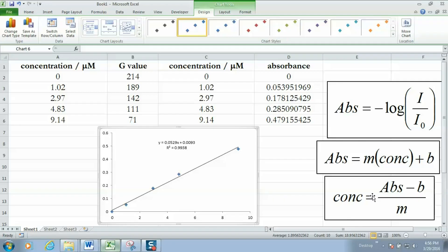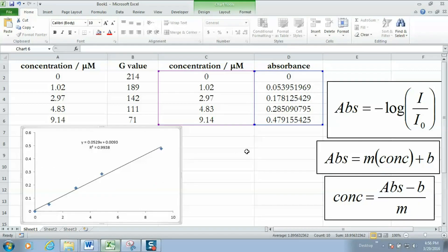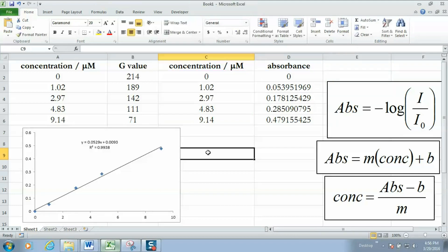You might recall that our absorbance, excuse me, our green intensity of our unknown was 116. So from that I need to calculate the absorbance. I'm going to go ahead and do that now. So I'm going to use this equation to calculate the absorbance of my unknown. In this cell I'm going to type equals negative log. The green value of the unknown was 116 and we'll divide that by the green value for the blank. So I see that 0.266 approximately is going to be the absorbance of the unknown.